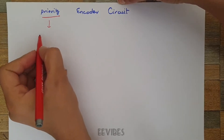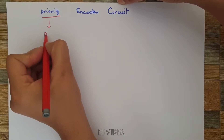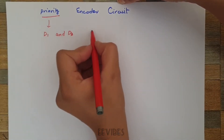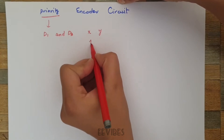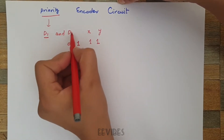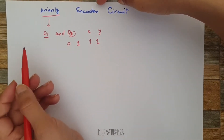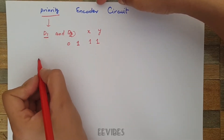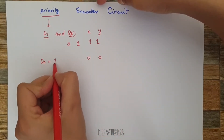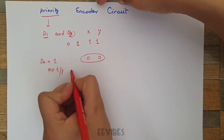Priority encoders will prioritize the input of the higher subscripted value, as explained in the previous lecture. For example, if you have switched on two input lines D1 and D3, the output should generate the values for x and y equal to 1,1 — corresponding to D3 — rather than 0,1 for D1, since D3 has the higher subscripted value. Another problem in simple encoder circuits is that output 0,0 is reserved for input line D0=1, yet the same output is produced when no input is present.